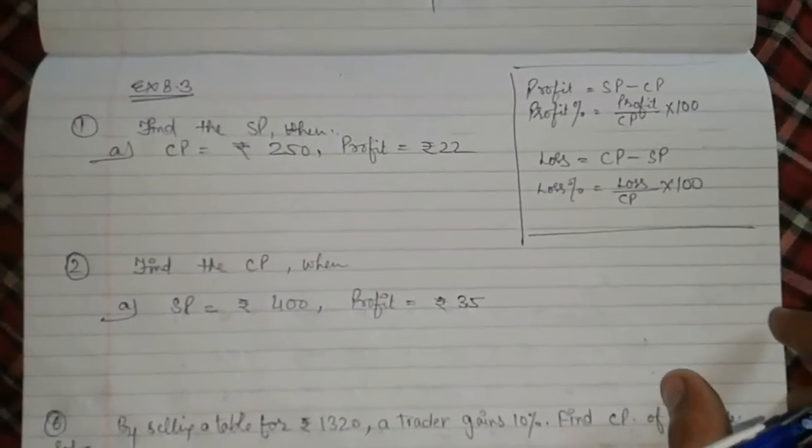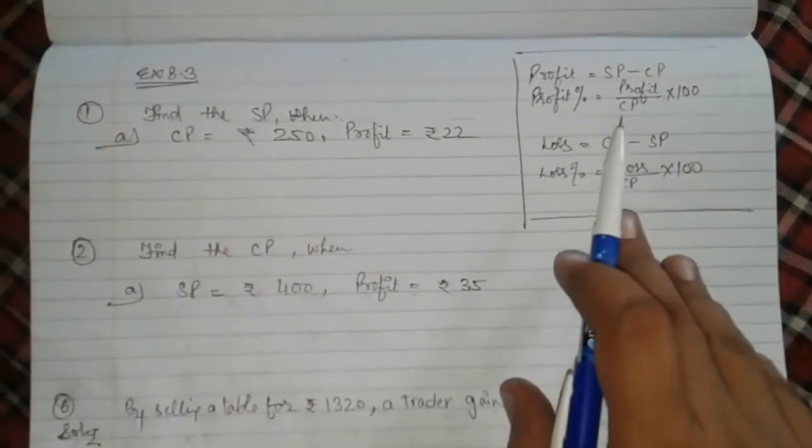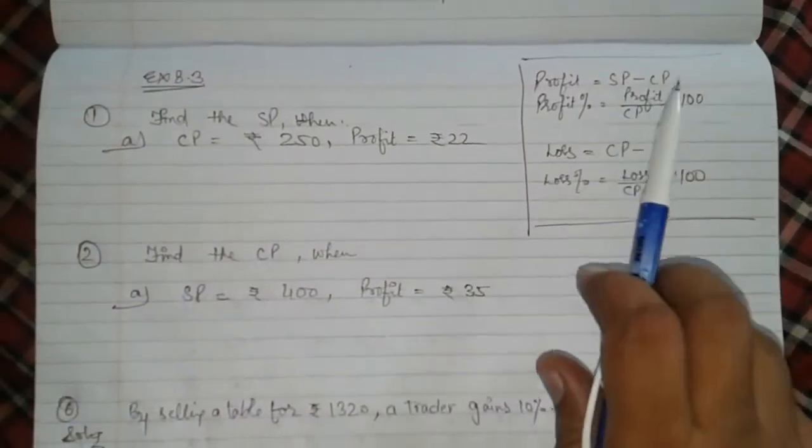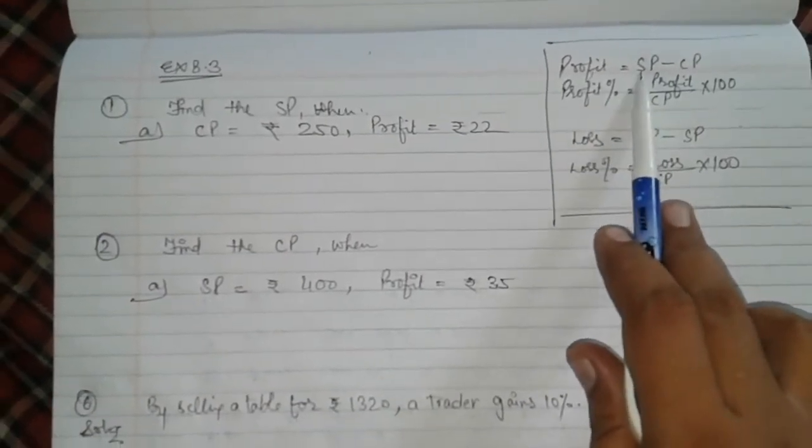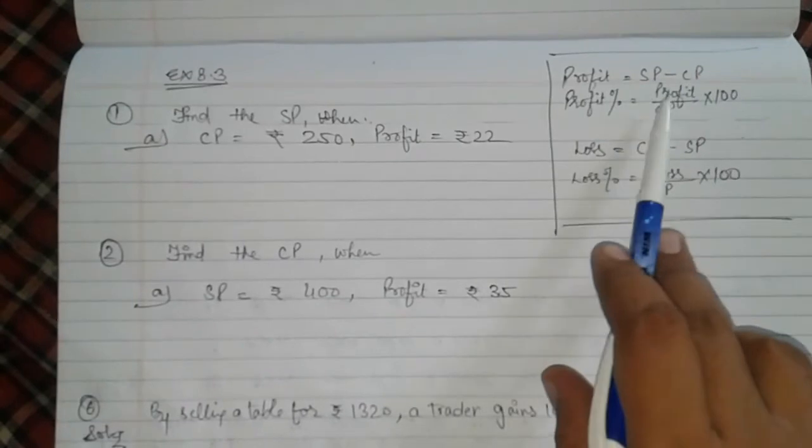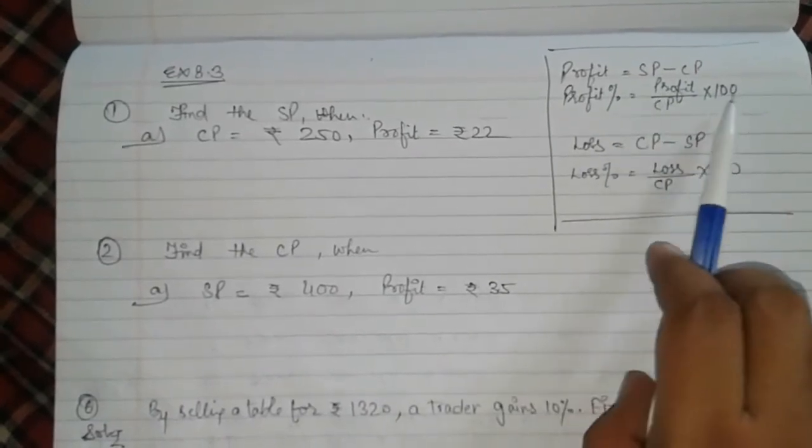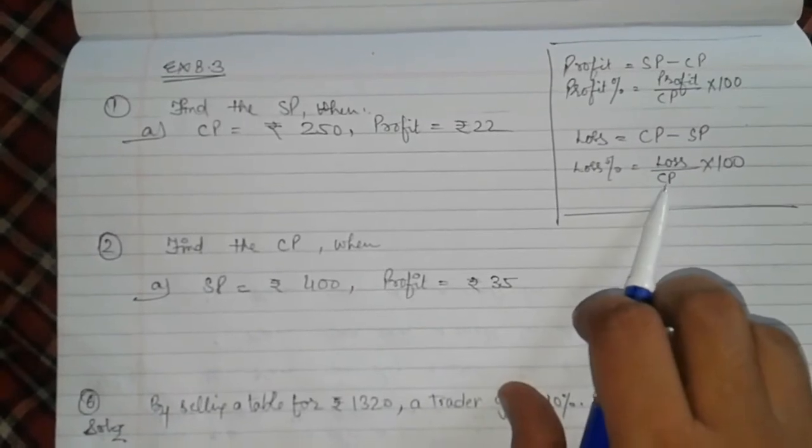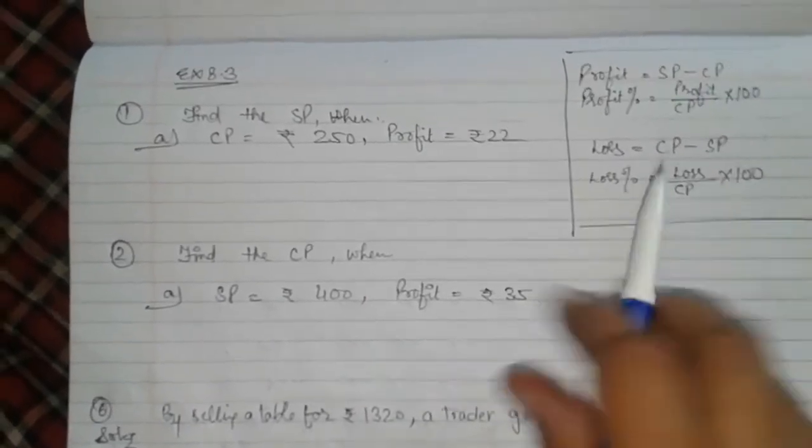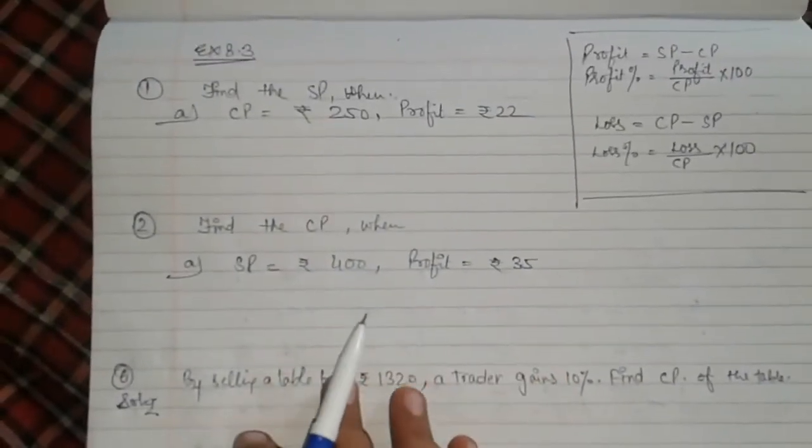Now exercise 8.3, profit and loss. Some formulas are: Profit equals SP minus CP. Profit percent equals profit upon CP multiply by 100. Loss equals CP minus SP. Loss percent equals loss upon CP multiply by 100.